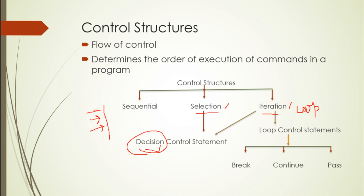In the case of selection and iteration, it is based on some decision — it can be controlled by some decision, so this is a decision control statement. For iteration, which we use in loop control statements, if our looping is happening but we need to terminate, we use break, continue. And in some cases where we have conditions but no value present, we use the pass statement.